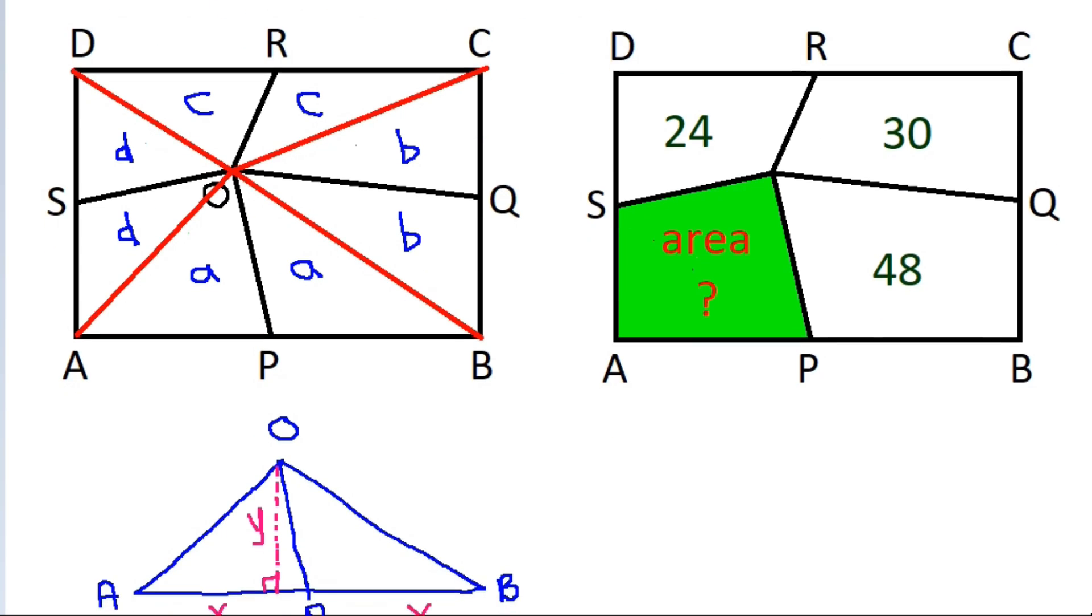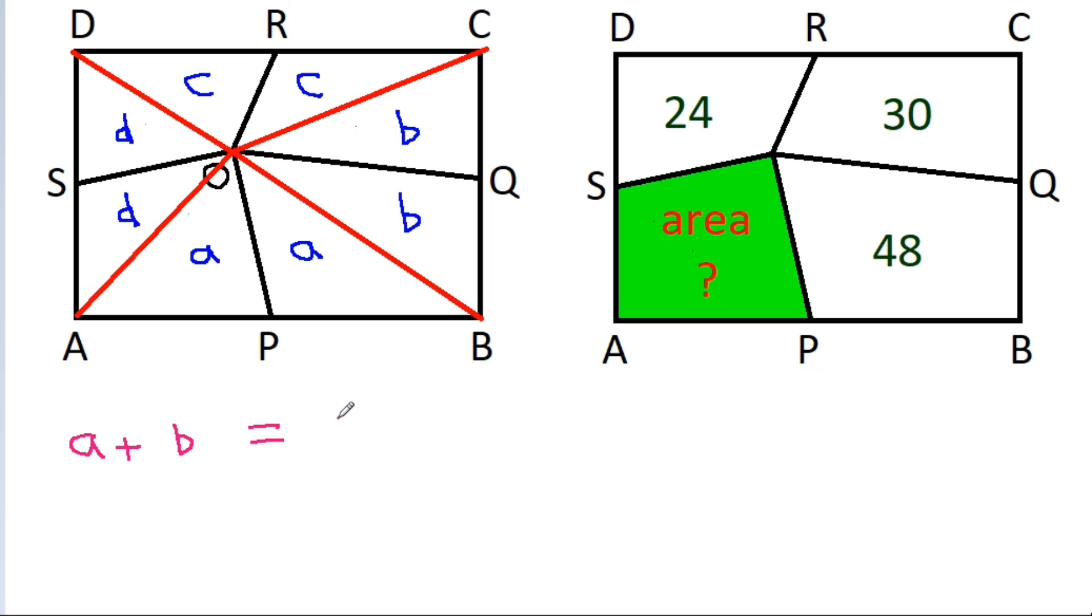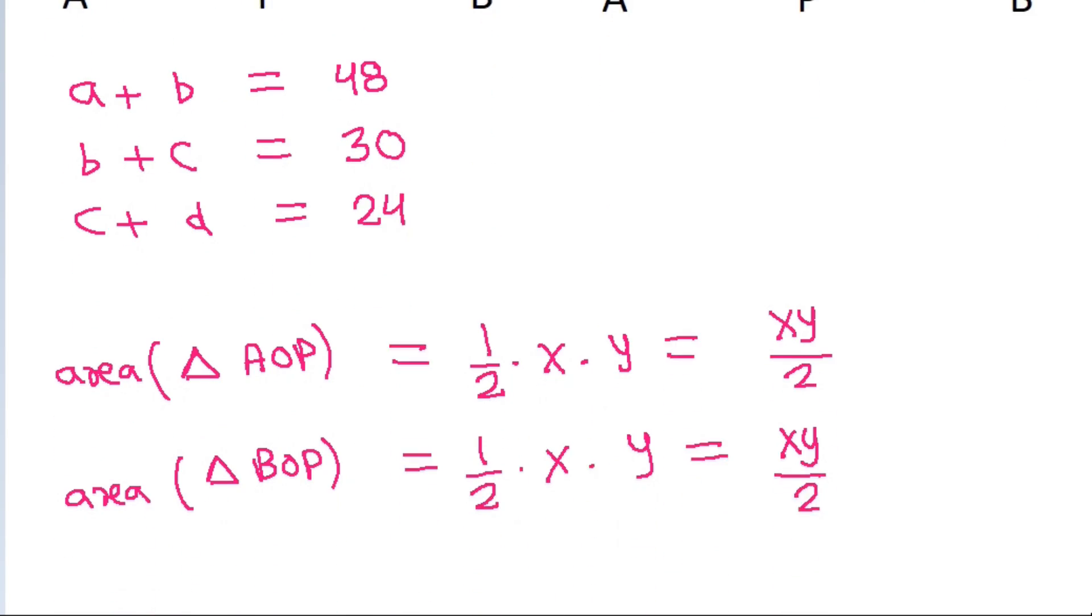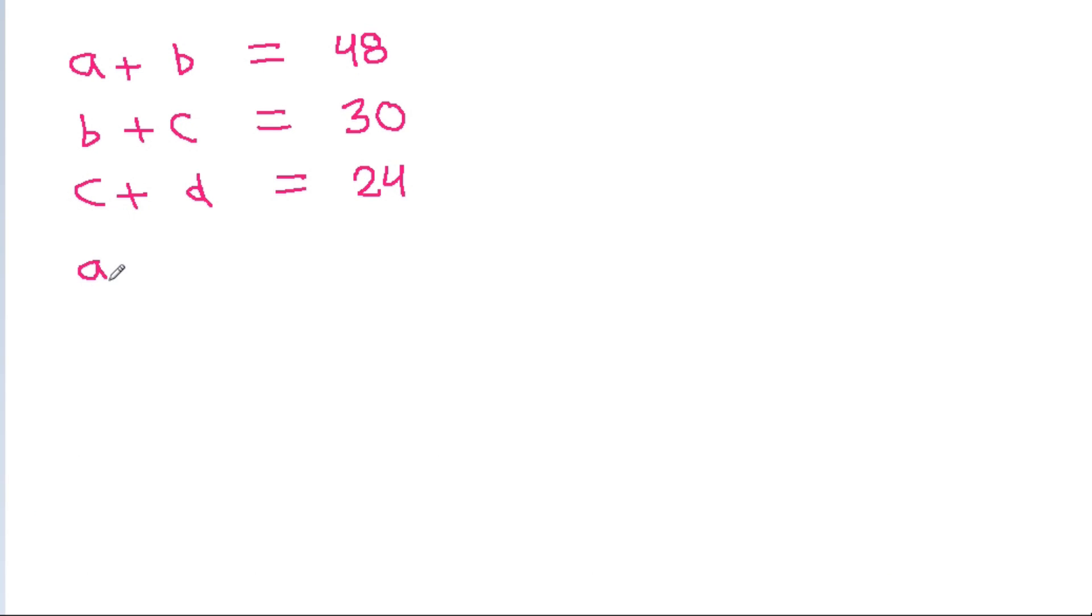Now if we compare these two rectangles, then we can say that A plus B equals 48, and B plus C equals 30, and C plus D equals 24, and we have to find the value of A plus D.